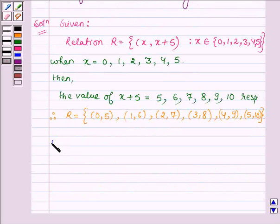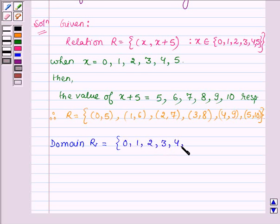And the domain of R will be the set of all the first elements of these ordered pairs which are {0, 1, 2, 3, 4, 5}.